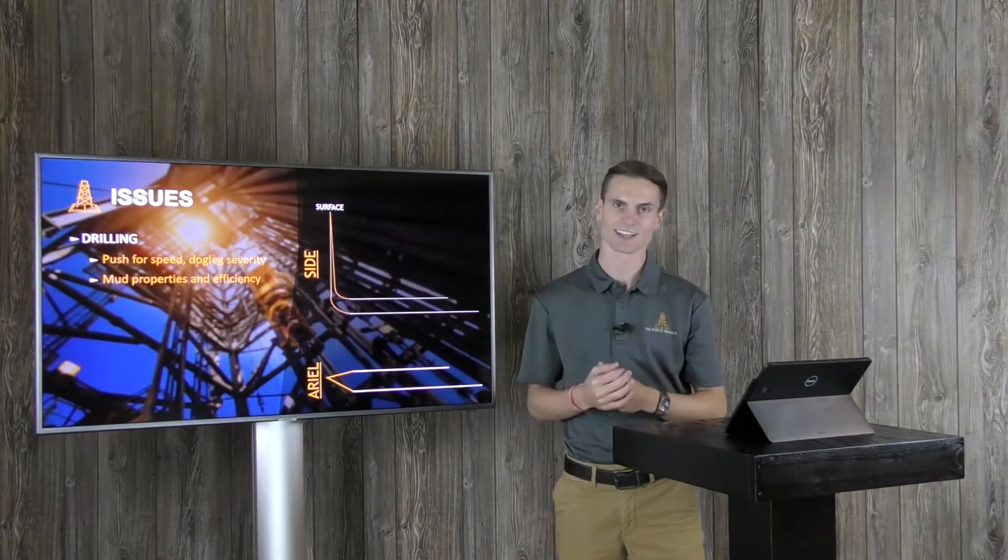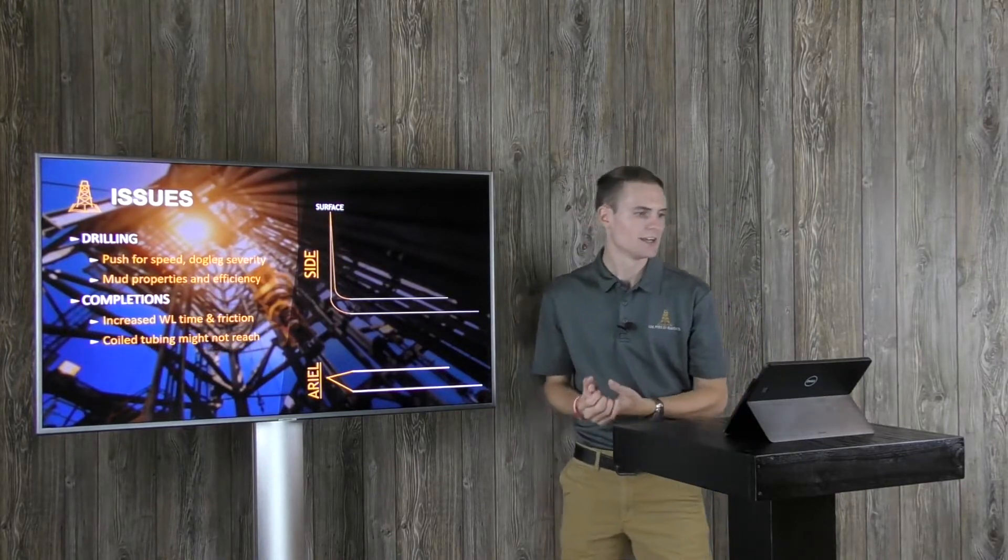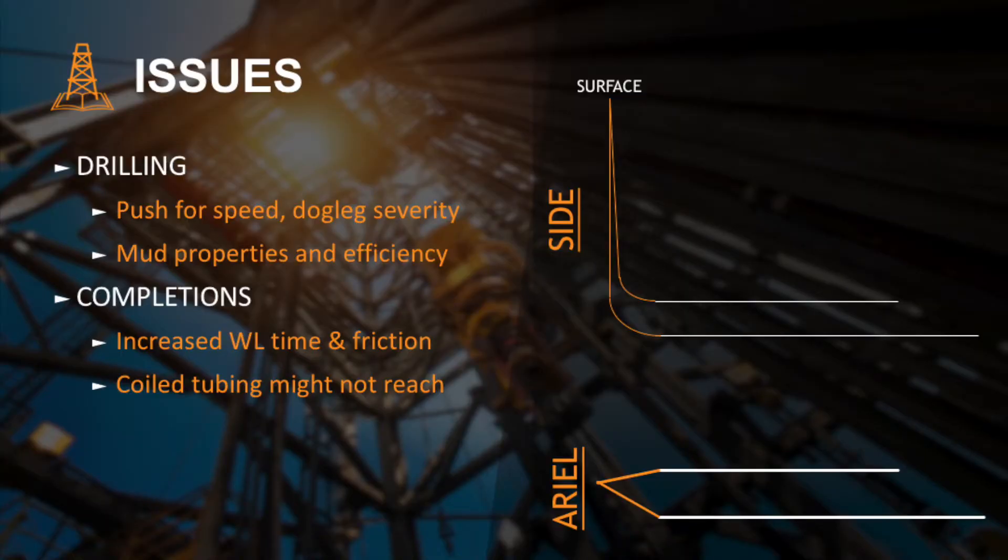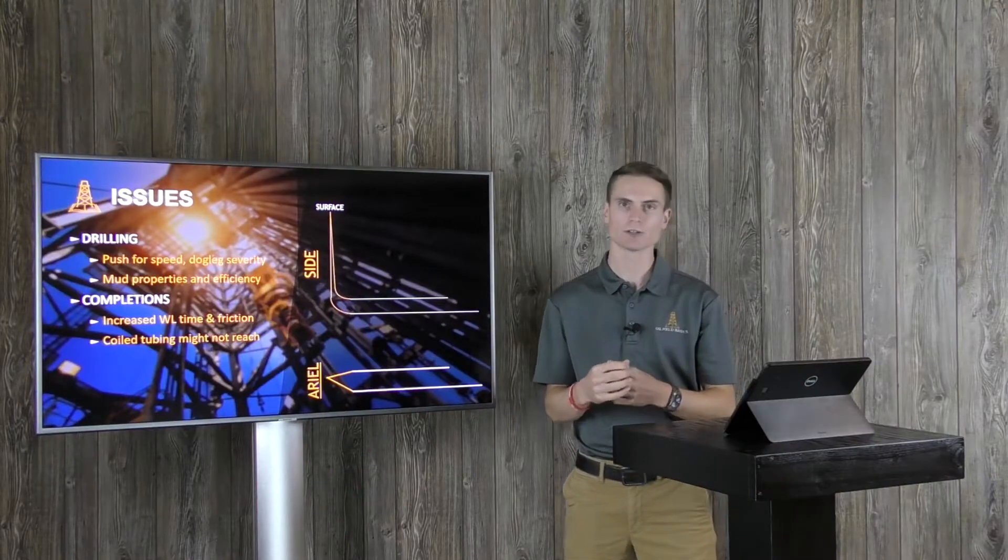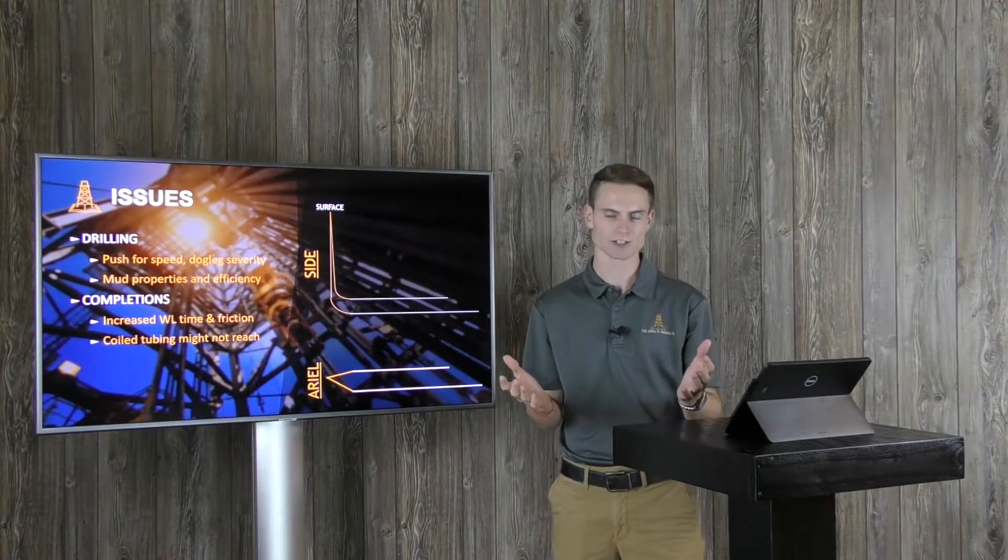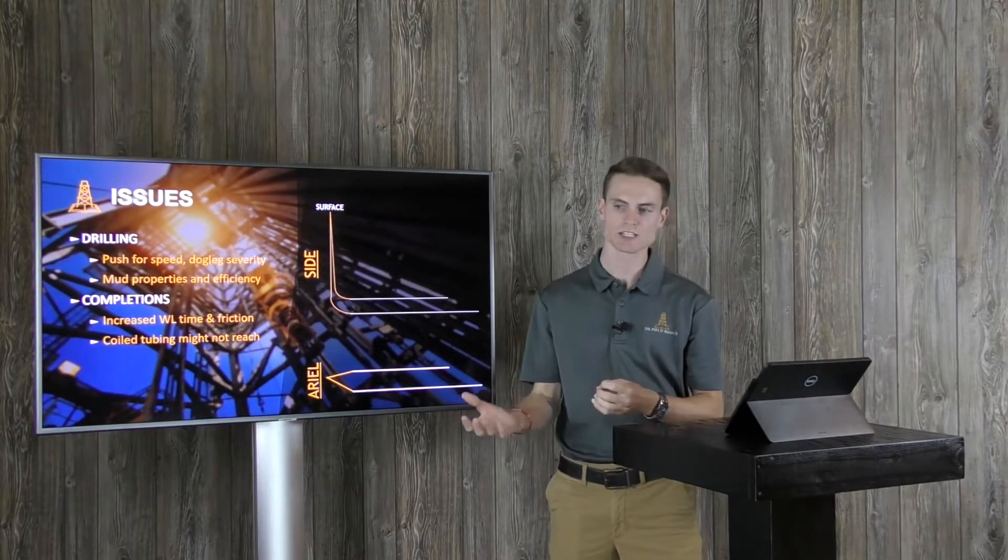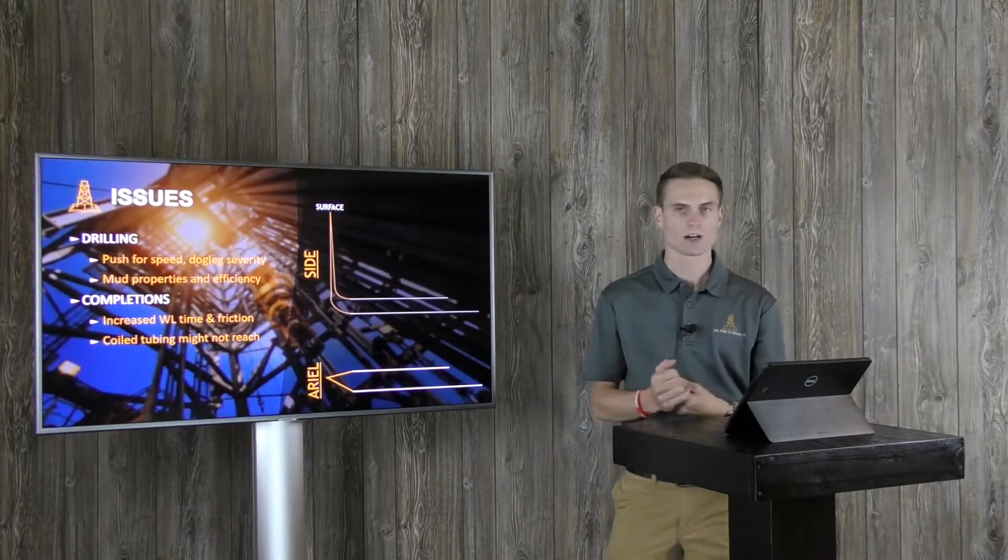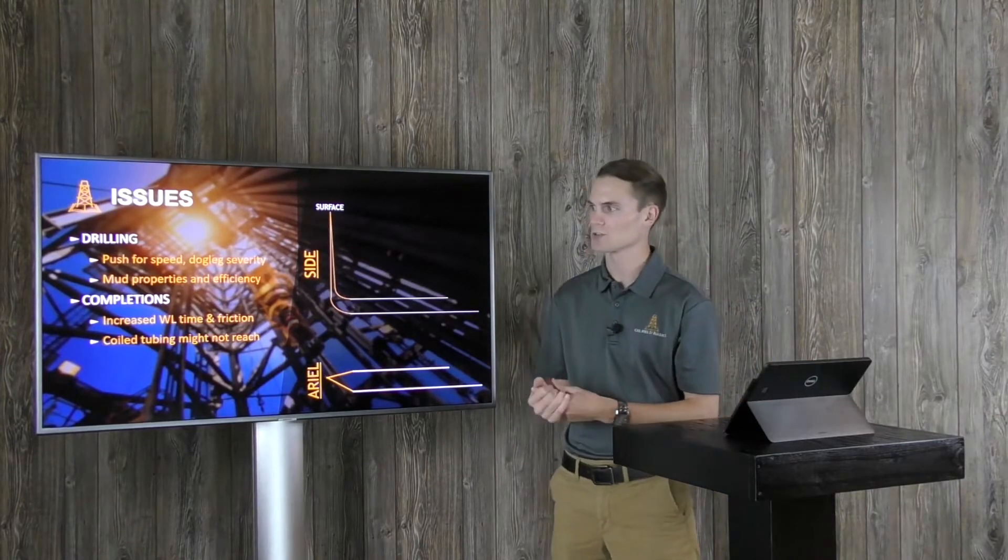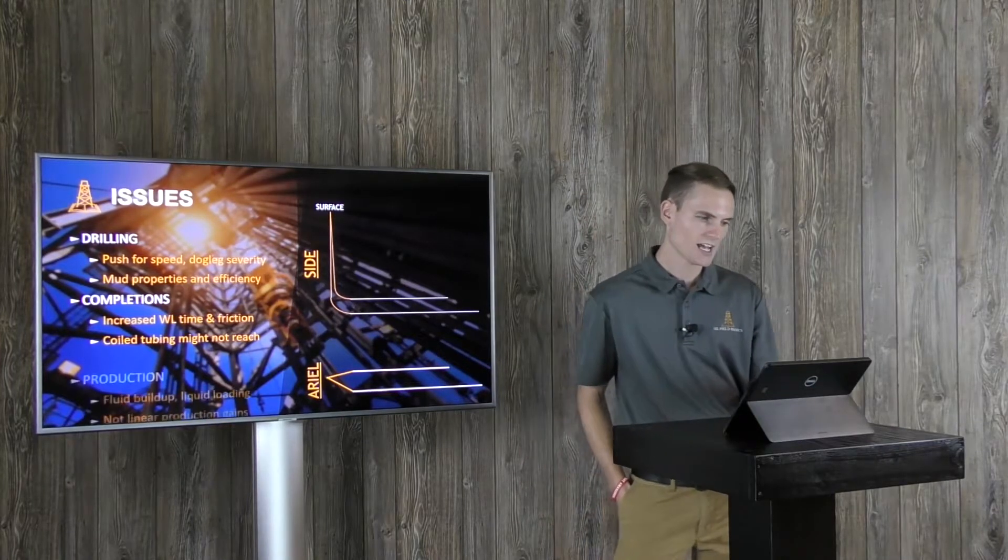In terms of completions, it can again increase your wireline run times and also your friction. That's a big deal in hydraulic fracturing—your friction pressures and pumping through all of that pipe and out into the formation. The friction with all of that is going to make it a little bit harder to treat and have an effective frack. Also again, coil tubing might not reach the end of your well, so you might have to be bringing in a workover rig.